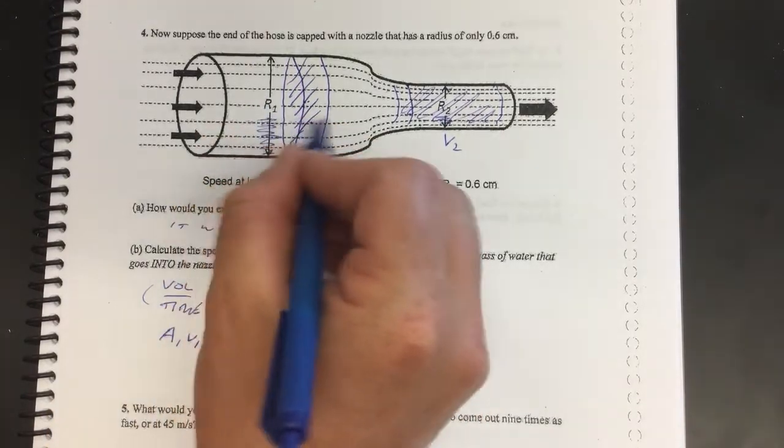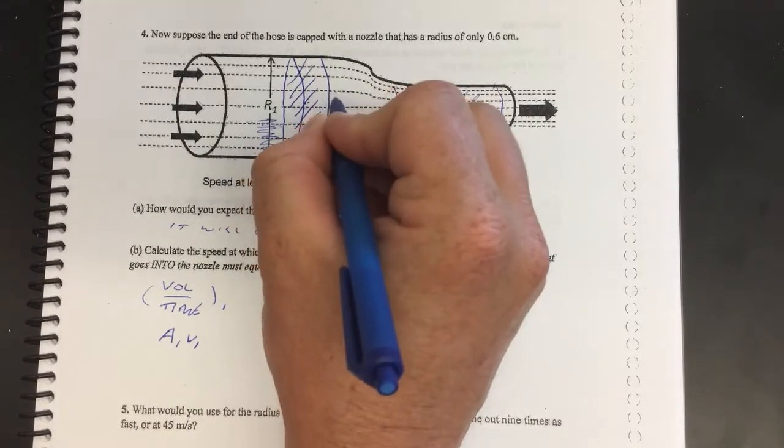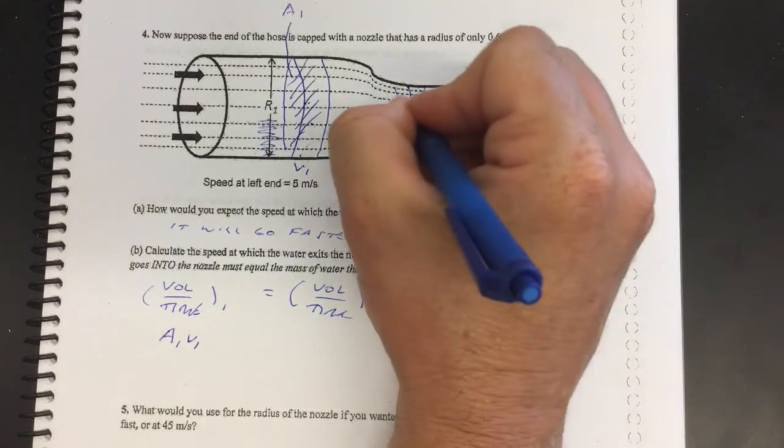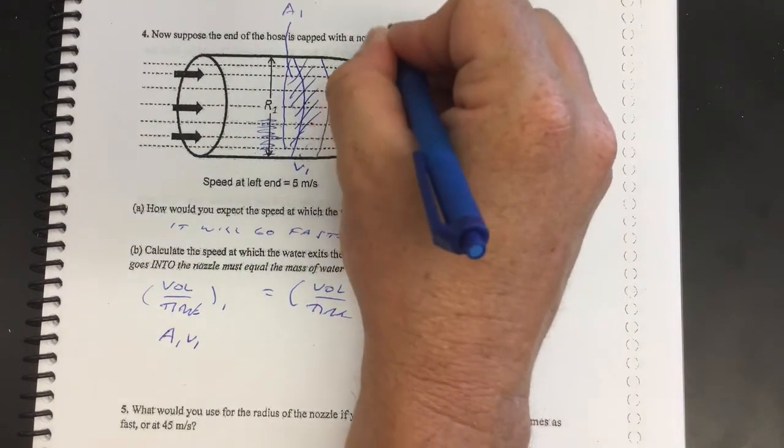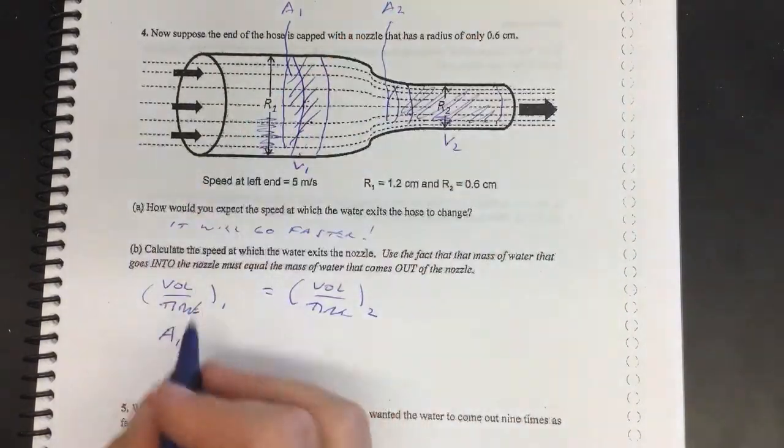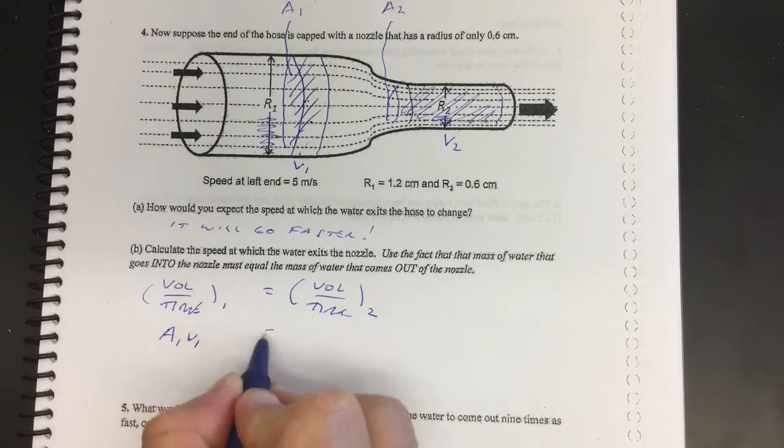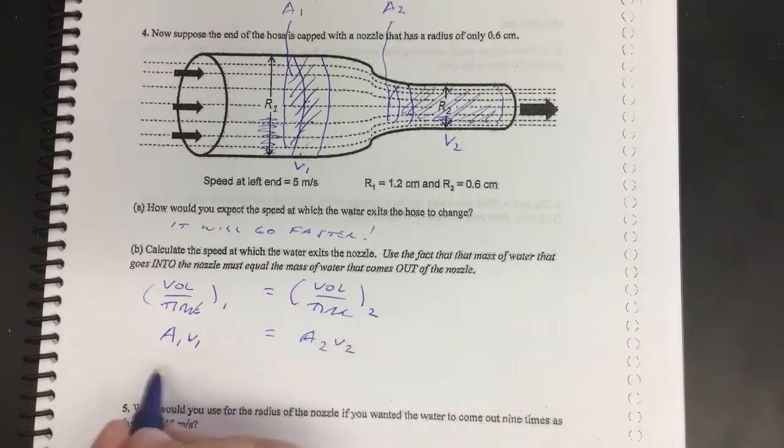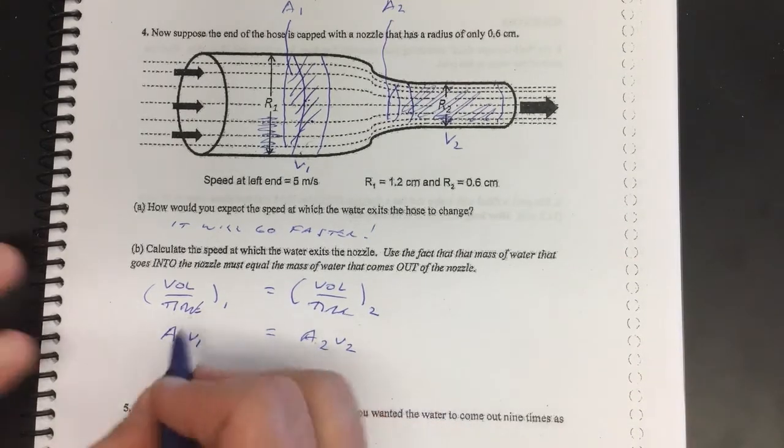So area 1 times velocity 1 - so let's give this thing an area, the side of this thing has like a cross-sectional area, and so does this, there's area 2. Well, so area 1 times velocity 1 has to be equal then to area 2 times velocity 2. So this is a nice way, very very very useful thing.